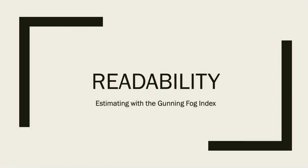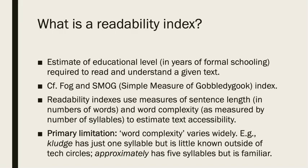Today we're going to talk about readability, and specifically the Gunning Fog Index readability. A readability index is an estimate of how many years of education are required to read and understand a given text. There are two in prominent use: the Gunning Fog Index, named after Robert Gunning, and the Smog Index. Readability indexes use measures of sentence length and word complexity, as measured by the number of syllables, to estimate text accessibility.